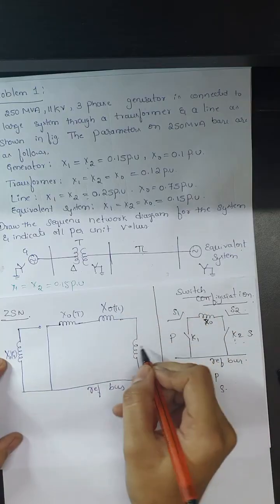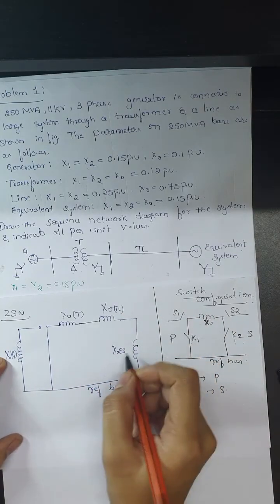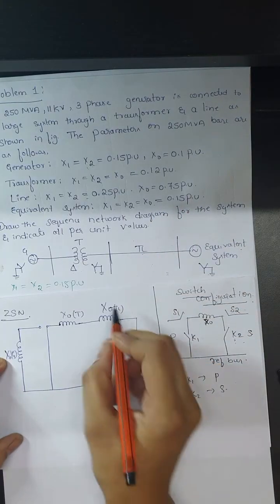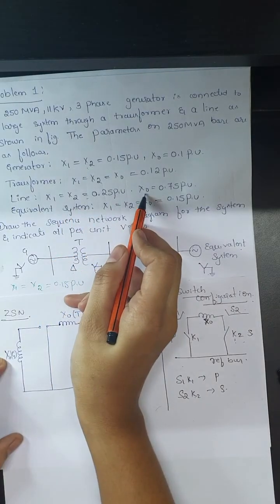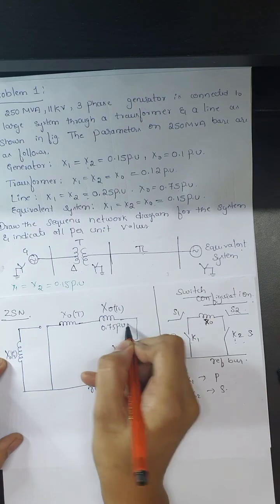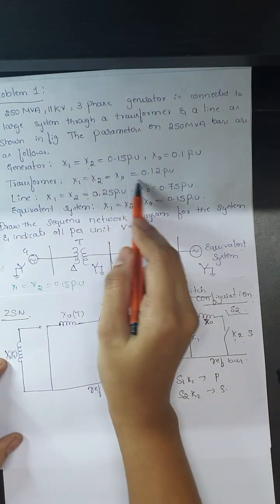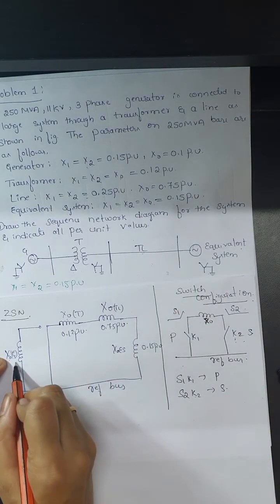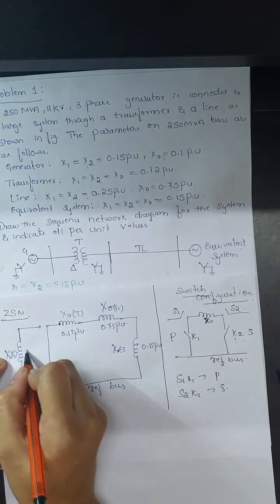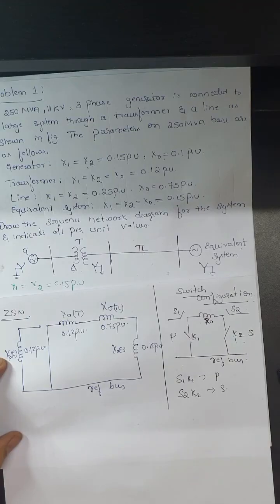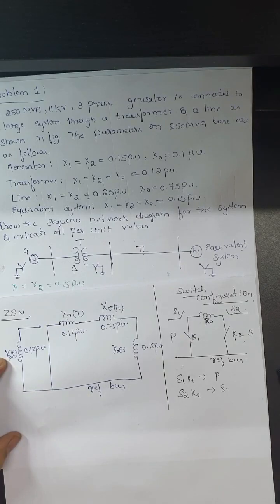The zero sequence values are: X0(equivalent system) = 0.15 per unit, X0(transmission line) = 0.75 per unit, X0(transformer) = 0.12 per unit, and X0(generator) = 0.10 per unit. This is how you draw the sequence network for a given single line diagram. Problems of this type typically carry six to eight marks.